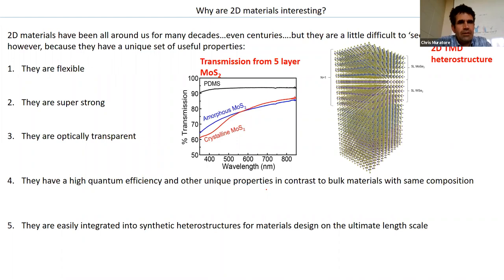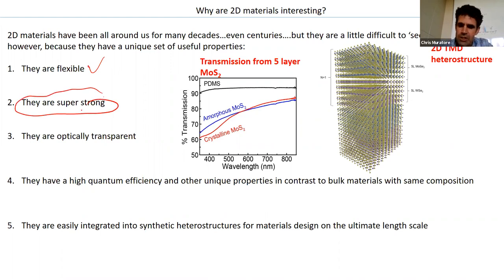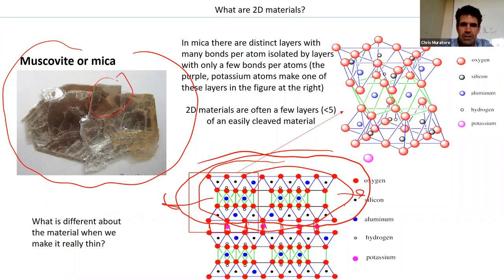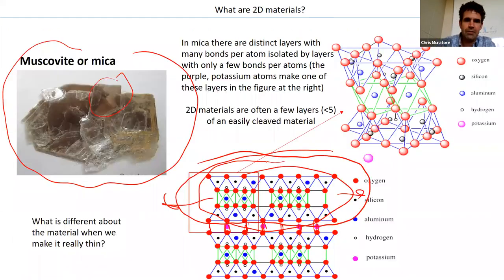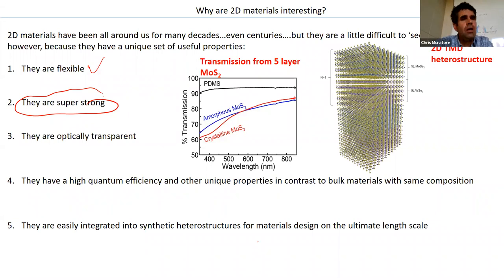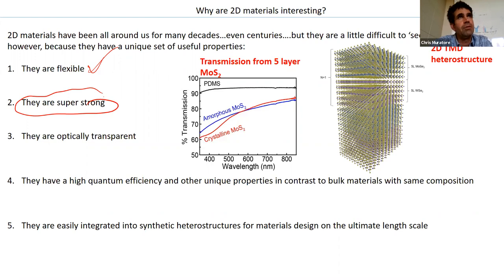2D materials demonstrate all these interesting properties. Not only are they flexible, but they're super strong. If I take a sheet of covalently bound material, I can apply a lot of force before it ruptures. 2D materials are really strong and are isotropically strong — they're not going to break preferentially in one direction. They're kind of set apart by that, in addition to being flexible. When they're thin, they become really transparent. Graphene, for example — every single atomic layer absorbs about 3% of incident visible light, making it almost completely transparent.